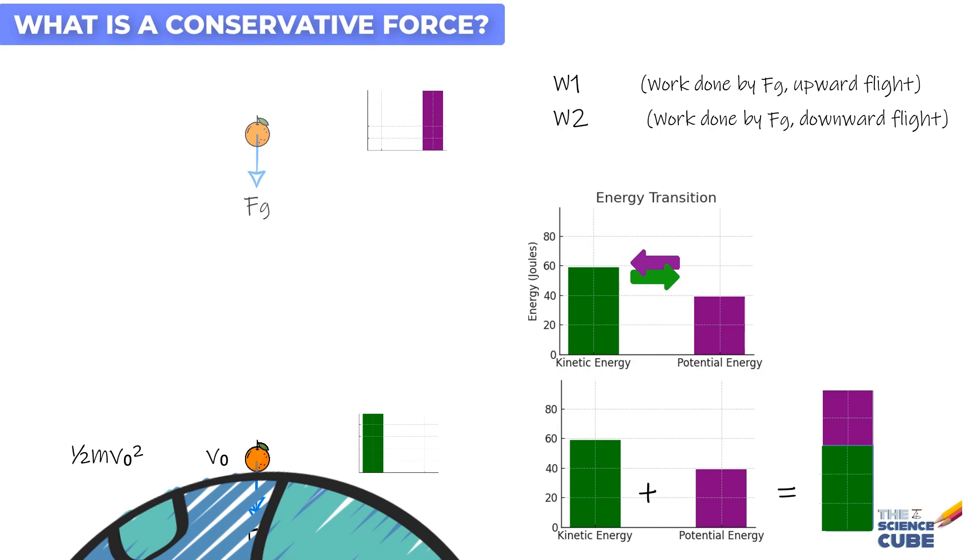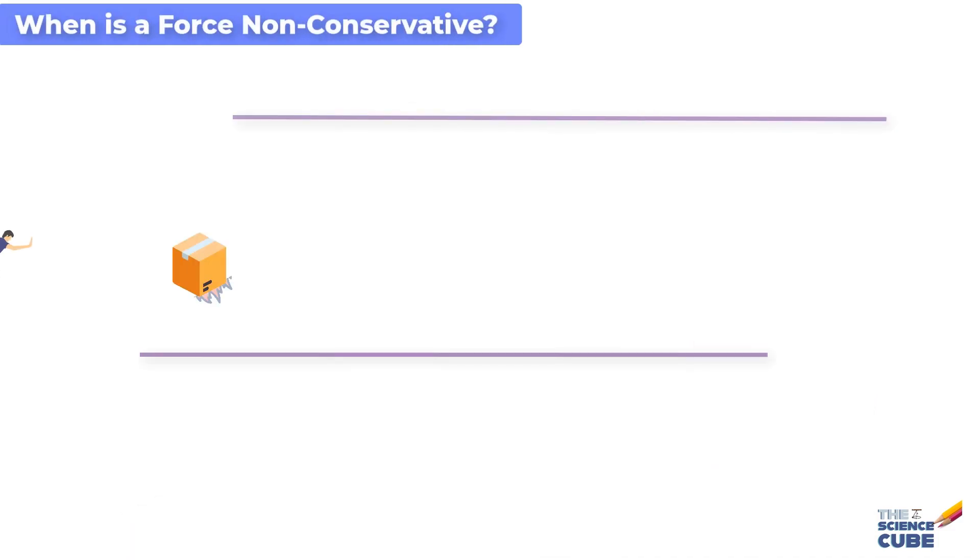And therefore, any other force where this condition is not met is called a non-conservative force. So, frictional force and drag force are non-conservative. And it is easy to figure out why they are non-conservative. So, if you send a block sliding across a floor that offers friction, a frictional force from the floor slows down the block by transferring its kinetic energy to another kind of energy called the thermal energy. Basically, the molecules of the floor and the block are getting agitated and the block and the floor heat up. And in the process, reduce the kinetic energy of the block. Well, we know that this energy transfer cannot be reversed. That is, the thermal energy cannot be transferred back to kinetic energy by the frictional force by reversing the direction of motion.